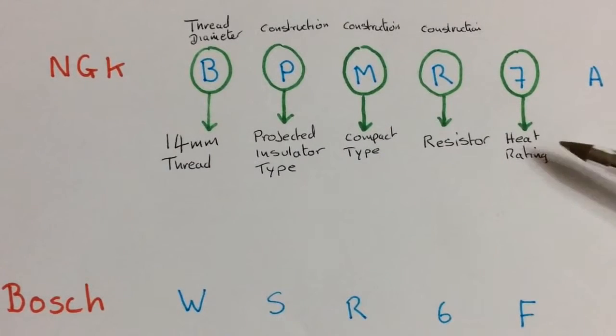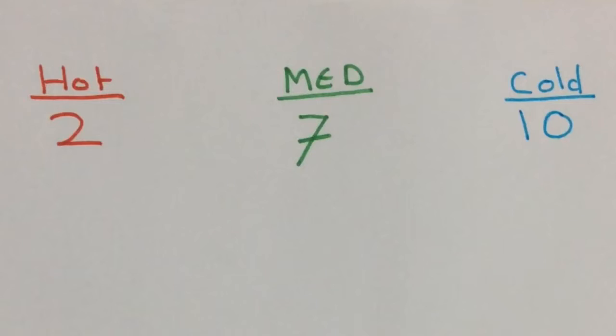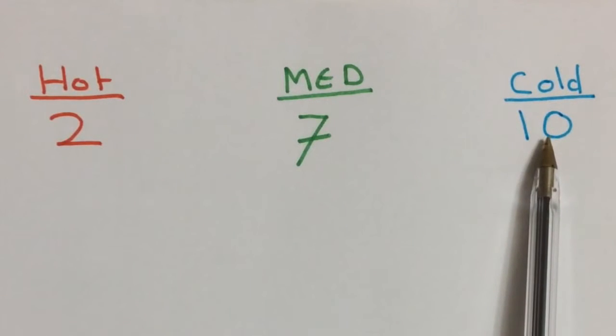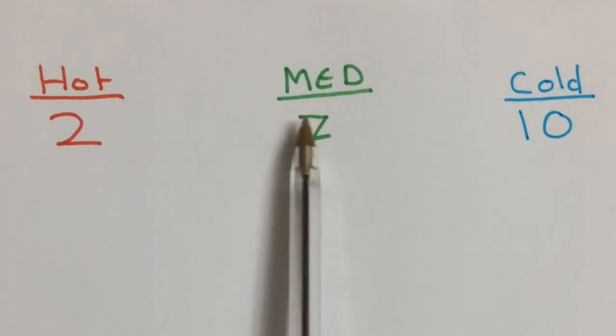7 relates to its heat rating. So its operating temperature. Basically, if we look at values from 2 up to 10. 2 being hot, running hot temperature. And 10 running as a cold temperature. Our plug runs at around 7. So it runs at a sort of medium heat.